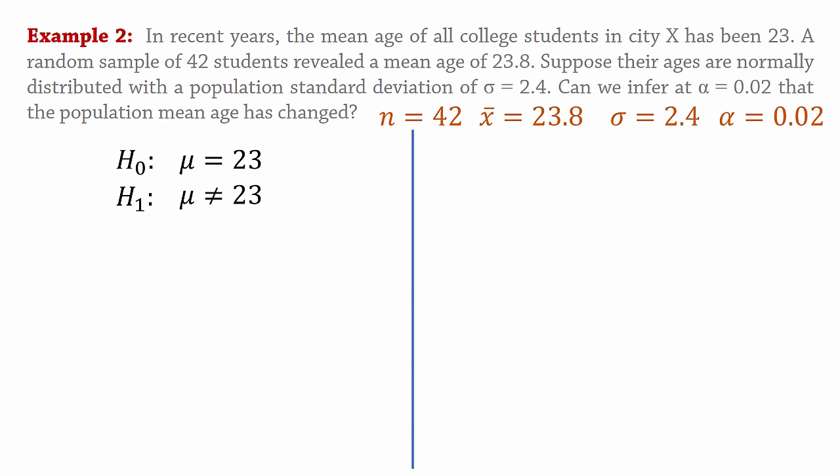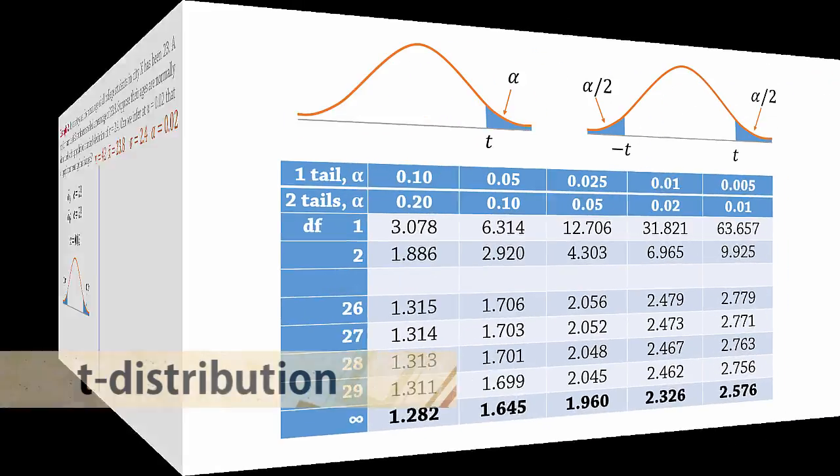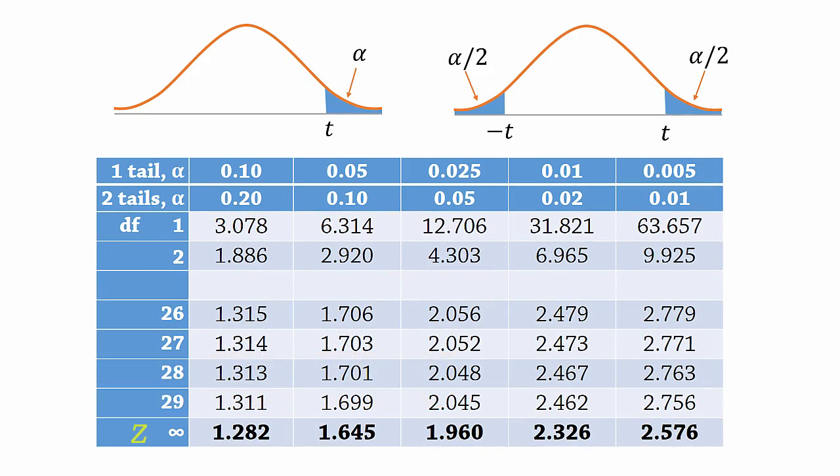Now suppose we conduct this same test at 2% significance level. The null and alternative hypotheses are still the same. The significance level alpha is 0.02. Dividing alpha into the two tails, we have 0.01 in each tail. Looking this up in the t table, under 0.01 in 1 tail or 0.02 in 2 tails, we see that the critical value is 2.326, which we can round to 2.33.